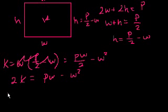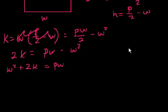Let's add w squared to both sides. You get w squared plus 2k equals pw. Let's subtract, because all of the choices have them setting equal to 0, so we could subtract pw from both sides, and you get, oh wait, I made a mistake.